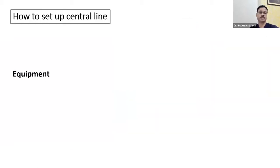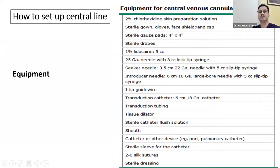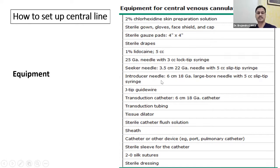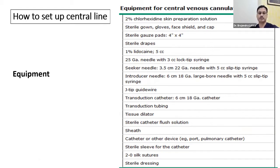For central line setup, equipment includes: 2% chlorhexidine skin preparation solution, sterile gown, gauze pads, sterile drapes — all required. For local anesthesia: a 25-gauge needle and locking system. Then the Seldinger introducer needle, guide wire, dilator, catheter, and connecting tubing. Scissors are needed to fix the catheter so it doesn't move. Sterile dressing is also important. You must have the complete checklist before you go into the procedure or assist in giving a central line.